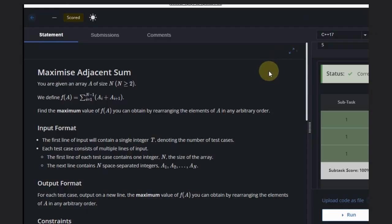Hello, welcome back to RE2 channel. Today we are going to see the coding problem Maximized Adjacent Sum. We are given an array A of size greater than or equal to 2, and we define a function f(A) that is the summation from i=1 to n-1 of (A[i] + A[i+1]). We need to find the maximum value of f that we can obtain by rearranging the elements of A in any arbitrary order.